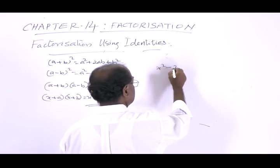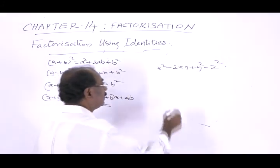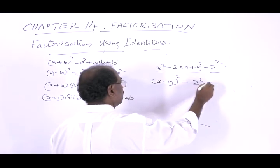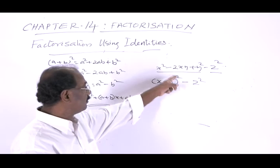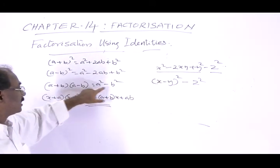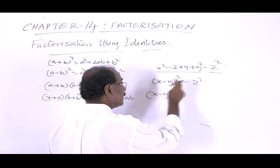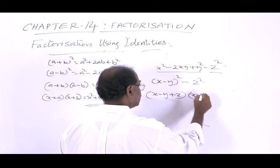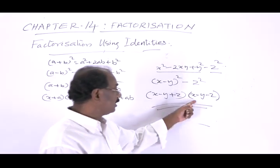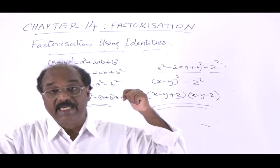Now consider x² - 2xy + y² - z². We consider the first three terms separately: x² - 2xy + y² = (x - y)². So the expression becomes (x - y)² - z², which is again of the form a² - b². Using the identity (a + b)(a - b), with a = (x - y) and b = z, this equals (x - y + z)(x - y - z). So the factors are (x - y + z) and (x - y - z). In this way, we can find factors using these identities. More examples in the next videos.